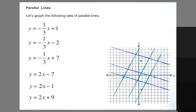We have three parallel lines: y = -1/3x + 1, y = -1/3x - 2, and y = -1/3x + 7. And then we have another three parallel lines: y = 2x - 7, y = 2x - 1, and y = 2x + 9.